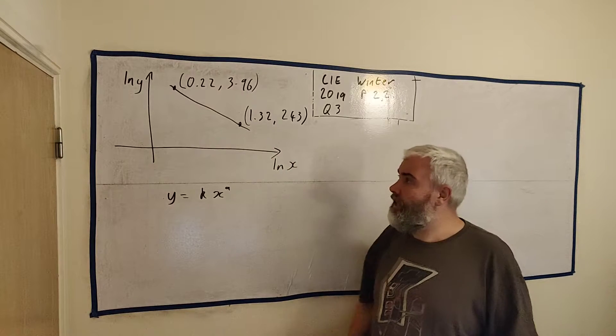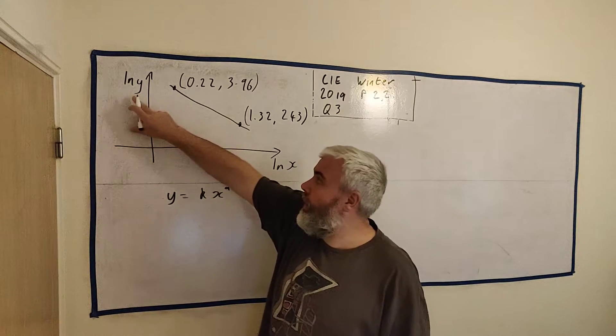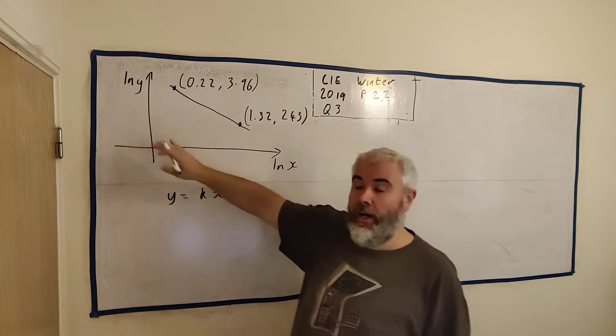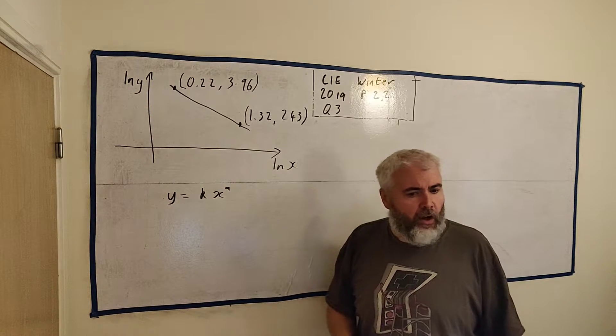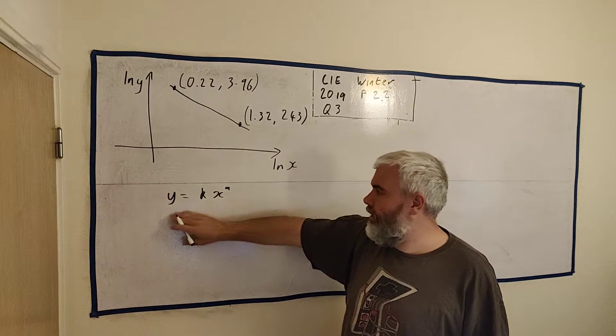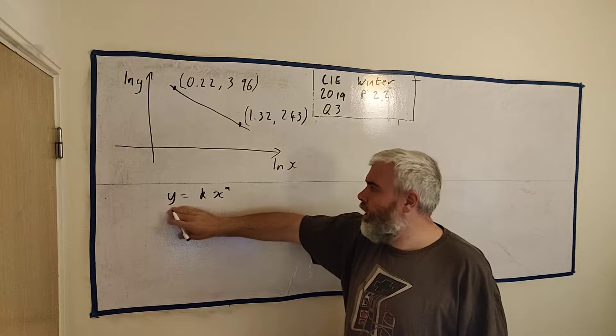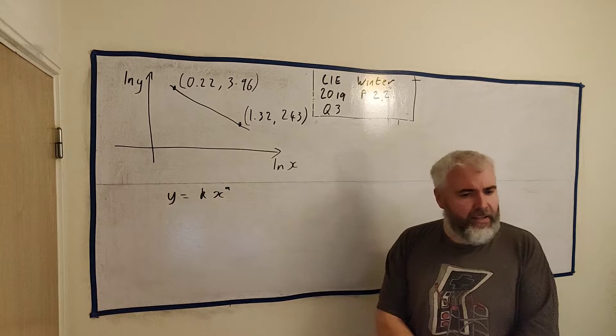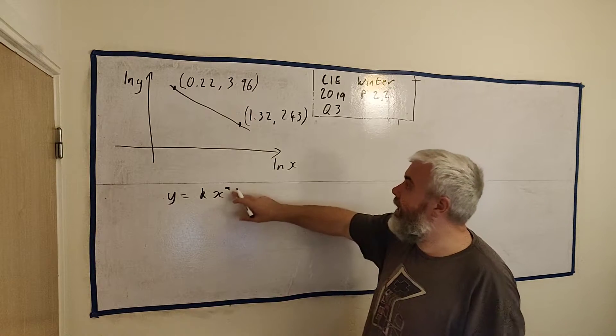Here's the information they give us. They draw us a graph. Now it's important to notice the graph is not in y and x. It's in natural log y and natural log x. They also tell us this equation here is correct. y is equal to kx to the power of a and they ask us to find k and a.